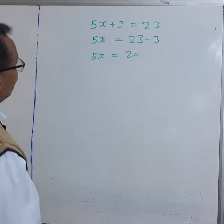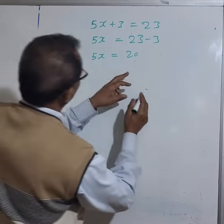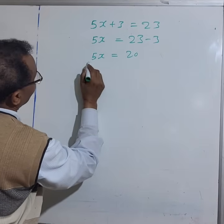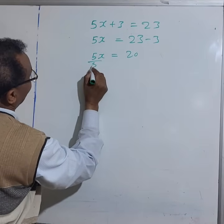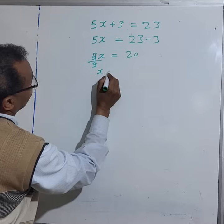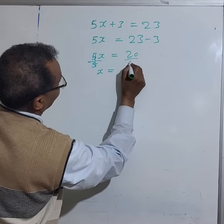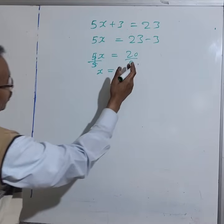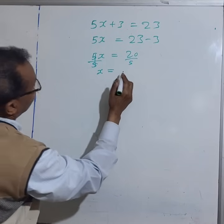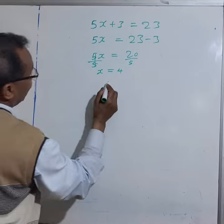So to find x, let's divide both sides by 5 — divided by 5. x equals 20 divided by 5, which is 4.